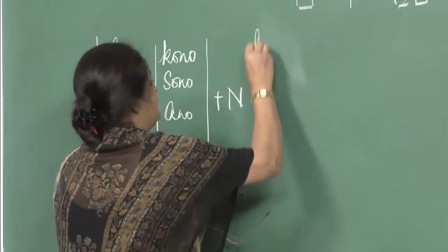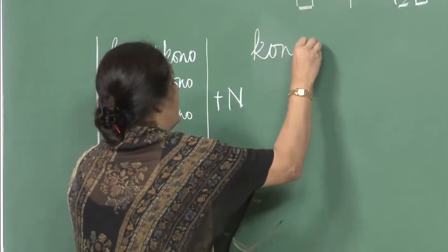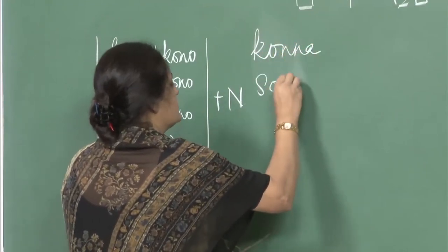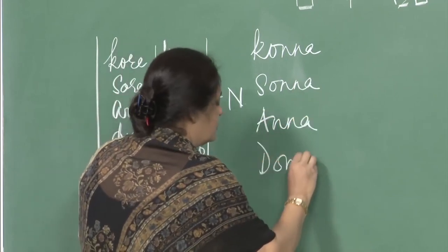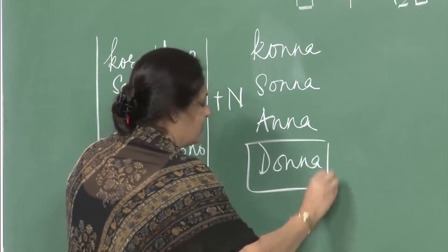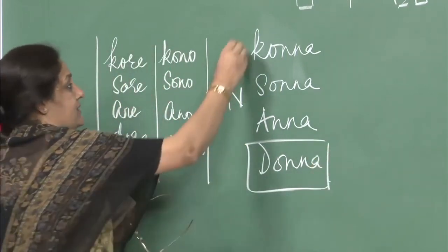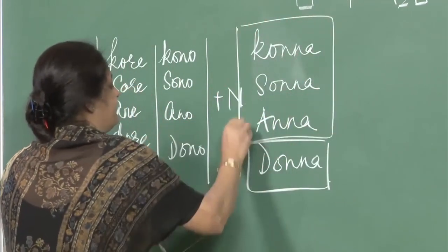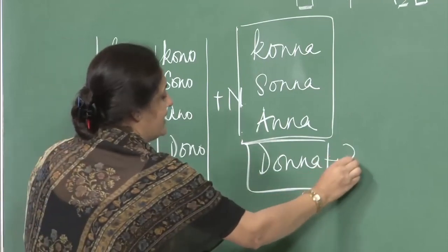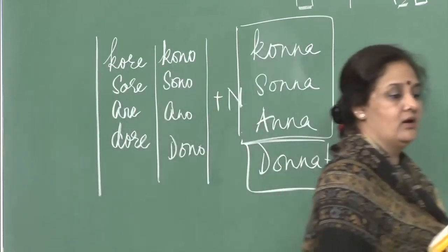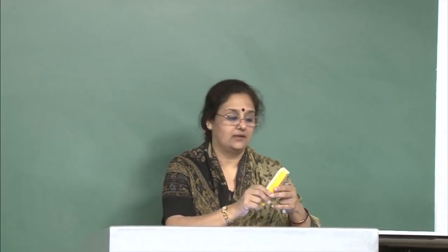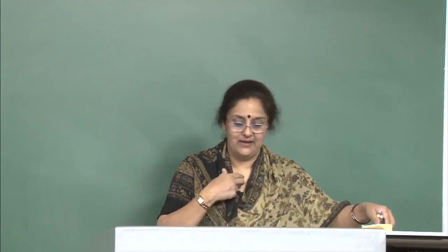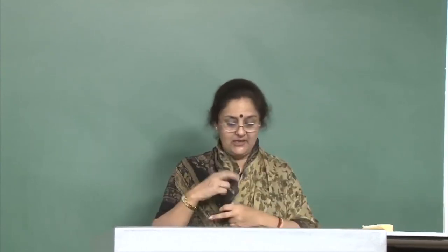We also have the series konna, sonna, anna, and donna. Donna is a question word meaning 'what type of' or 'what kind of'. It could refer to a person or a thing. Let us see the conversation here.